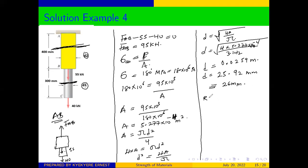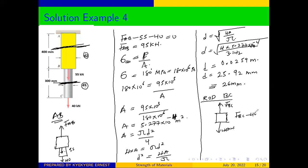So we consider rod BC. In the same manner, we are going to cut through the mid-section and draw our free body diagram. From here, we have a force pointing down which is 40 kilonewtons. To every action there is an equal and opposite reaction, so there will be a reaction at the cut section which we call FBC. Therefore FBC minus 40 kilonewtons equals zero, and from here FBC equals 40 kilonewtons.